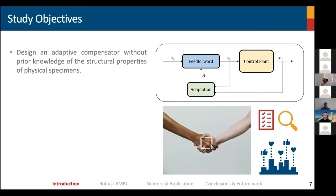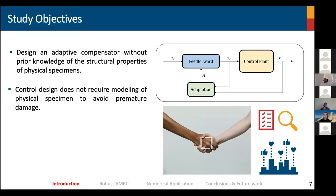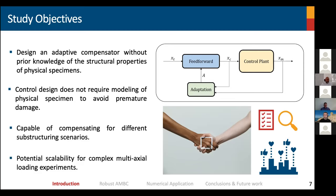This is the question that drives our research. The study objectives are as follows. First, design an adaptive compensator without prior knowledge of the structural properties of physical specimens that are going to be tested. Second, the control design does not require modeling of the physical specimen to avoid premature damage. Third, try to get a compensation scheme that is capable of synchronizing tests for different substructure scenarios. And finally, look for the potential of scalability of this proposed methodology for more complex multi-actuator loading scenarios.